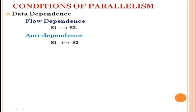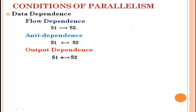The next type is output dependence. Two statements are output dependent if they produce the same output variables. Hence S1 and S2 are called output dependent. Next comes input-output dependence. Read and write operations are IO statements.